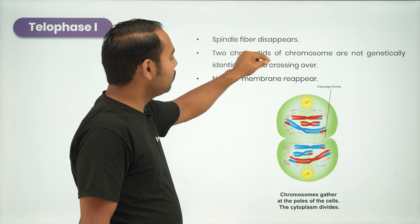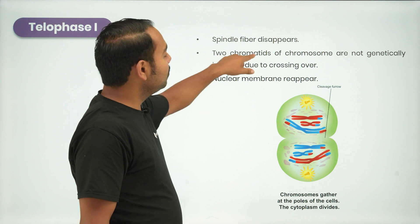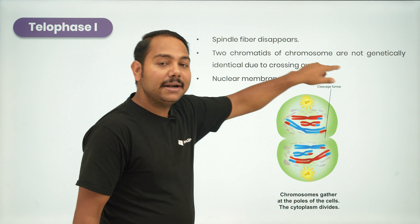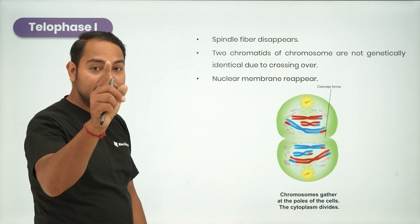Two chromatids of chromosome are not genetically identical. The chromosome of two chromatids is not genetically identical due to crossing over.